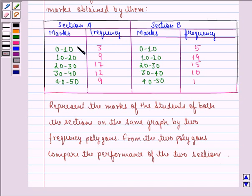First of all we find the class marks for these intervals. We write the class marks in front of these intervals in a bracket. We say that the class marks of the interval 0 to 10 will be 5, for 10 to 20 will be 15, 20 to 30 will be 25, 30 to 40 will be 35, 40 to 50 will be 45 and same for this also.